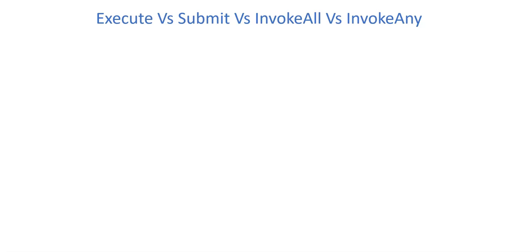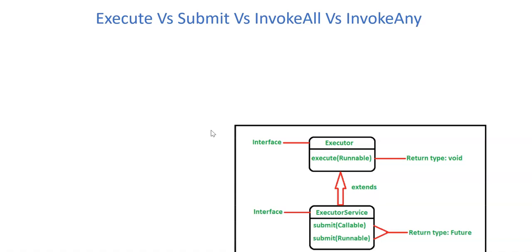So let's come back to our main discussion areas. First of all, execute method belongs to Executor main interface and there is another sub interface which extends the Executor interface called ExecutorService. This interface basically contains submit method, invokeAll method and invokeAny methods. So those methods are available under ExecutorService interface and only execute method is available in Executor main interface.